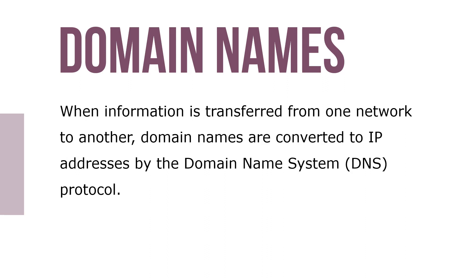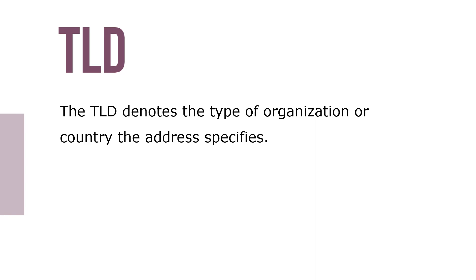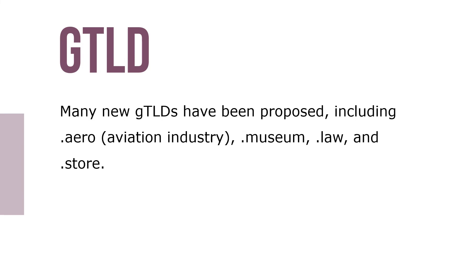Domain names such as IBM.com or WhiteHouse.gov are unique identifiers of computer or network addresses on the Internet. You see domain names used in Uniform Resource Locators, URLs, also called Universal Resource Locators, to identify a web page. A URL is the address of a document or a site on the Internet. The TLD denotes the type of organization or country the address specifies. Many new gTLDs have been proposed, including .aero for the aviation industry, .museum, .law, and .store.